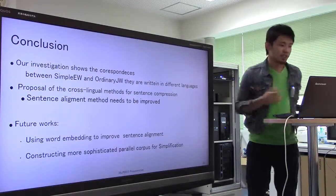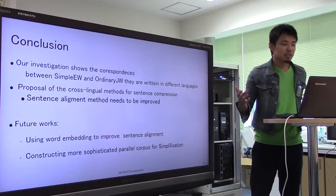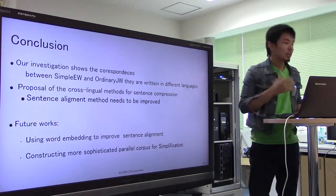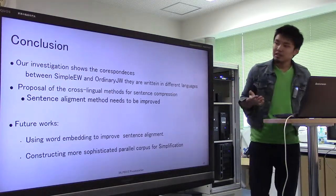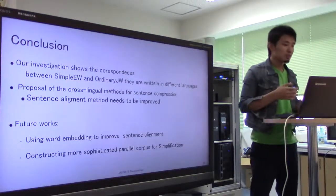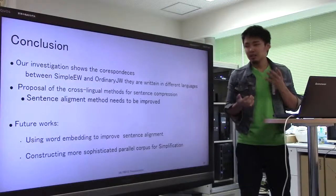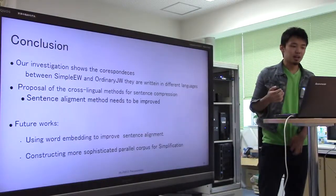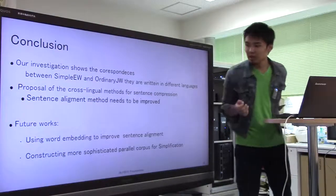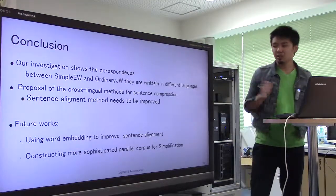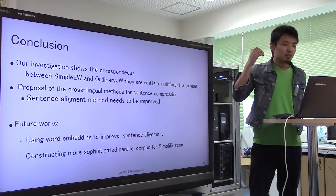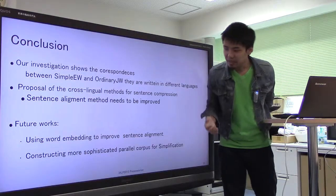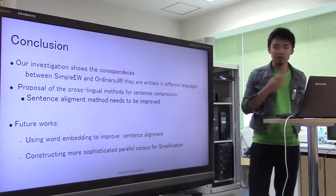Finally, we conclude our presentation. Our investigation shows the correspondences between Simple English Wikipedia and ordinary Japanese Wikipedia, although they are written in different languages. We propose a cross-lingual method for sentence compression, but there is some room which should be improved. To solve this problem, we will use word embedding or a thesaurus. As future work, we are aiming at constructing a more sophisticated parallel corpus for simplification in Japanese.